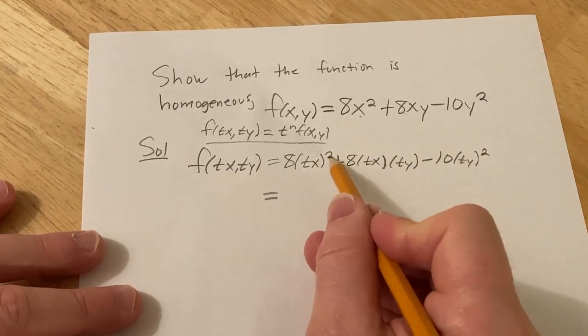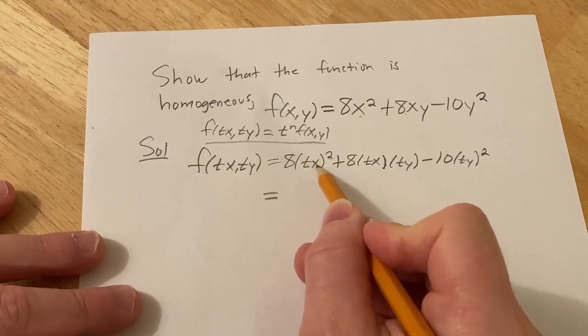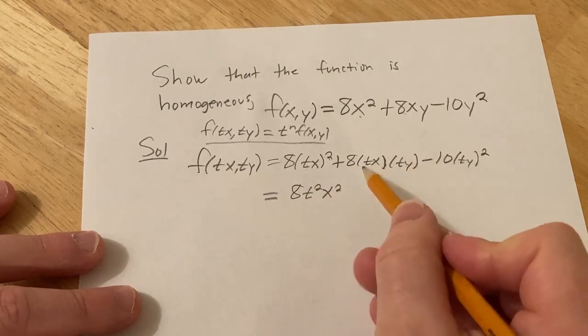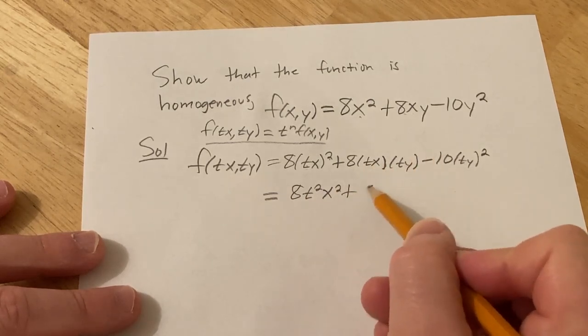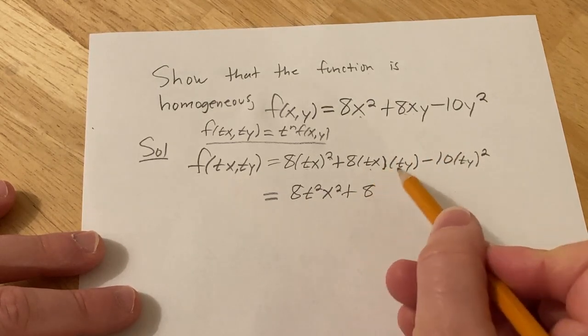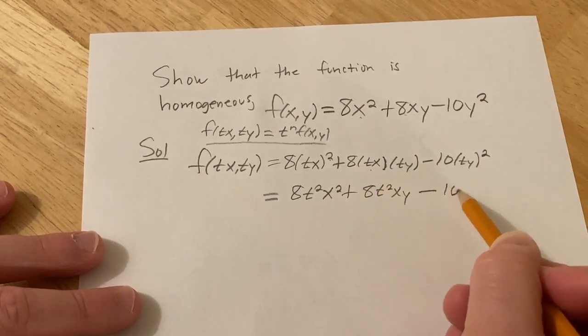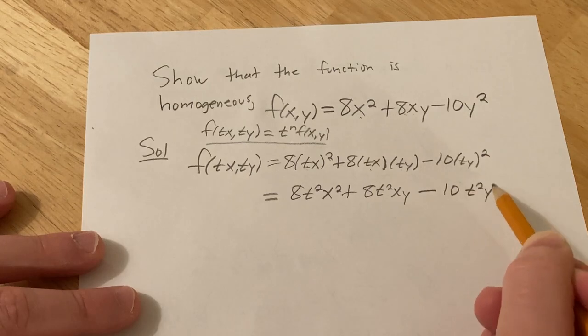So this is equal to, let's see, t squared x squared. Well I'll leave it like this, 8 t squared x squared and then plus 8 t squared xy minus 10 t squared y squared.